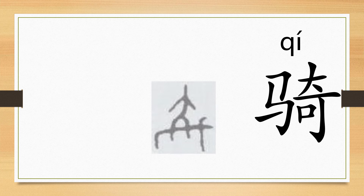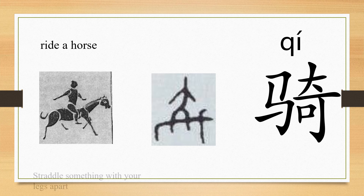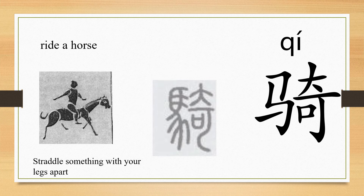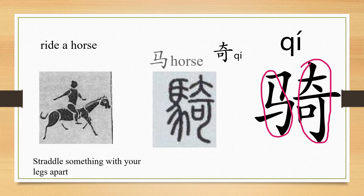The ancient Chinese character for 骑 comes from the image of a person riding a horse. The original meaning is riding the horse, and then it extends to straddling something with your legs apart. The writing has two parts: the character 奇 (qí), which is the phonetic component, and the character 马 (mǎ), which means horse and is the semantic component.